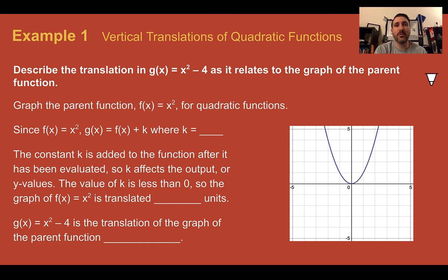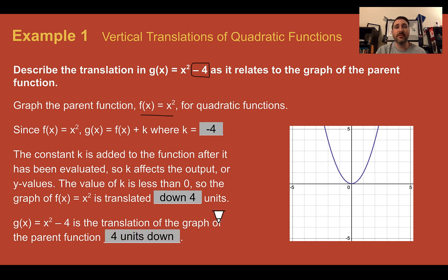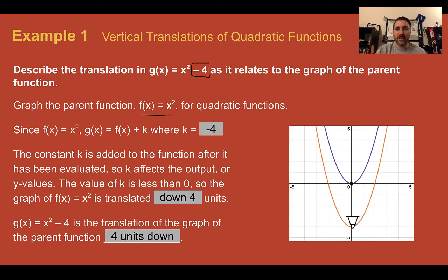Example one: vertical translations of quadratic functions. Describe the translation in g of x equals x squared minus four as it relates to the graph of the parent function. Our parent function is x squared. In g of x, the k value at the end — not in parentheses — tells us it's going to move up or down. Here k is negative four, so it's going to be translated down four units. The vertex is the most obvious place it was moved down four units.